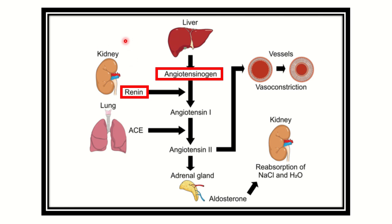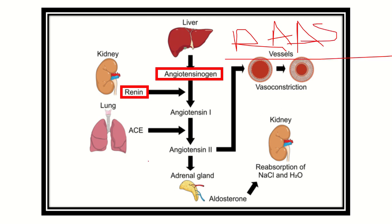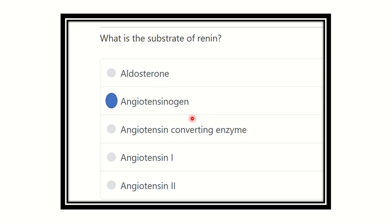This total mechanism is known as the renin-angiotensin-aldosterone mechanism, also known as the RAAS — renin-angiotensin-aldosterone system. So renin acts on angiotensinogen, while angiotensin converting enzyme acts on angiotensin one. The answer is clear: the substrate of renin — the substance renin acts on — is angiotensinogen, which is released from the liver.